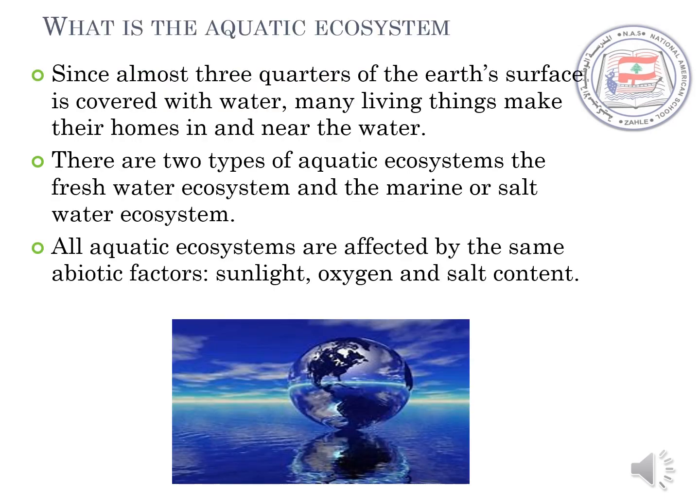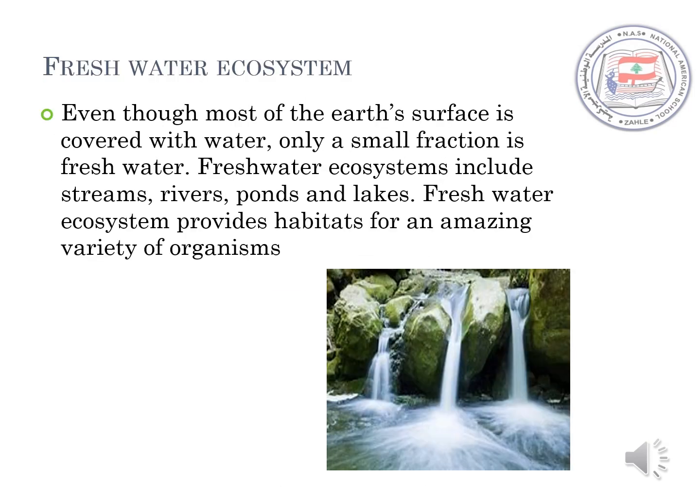What is the aquatic ecosystem? Since almost three quarters of the Earth's surface is covered with water, many living things make their homes in and near the water. There are two types of aquatic ecosystems: the freshwater ecosystem and the marine or saltwater ecosystem. All aquatic ecosystems are affected by the same abiotic factors: sunlight, oxygen, and salt content.